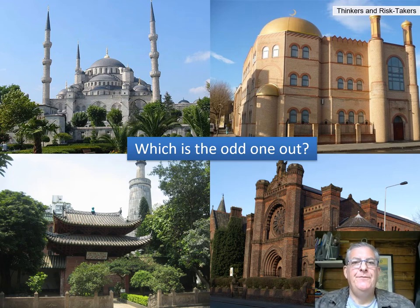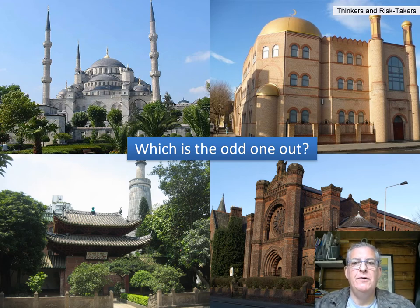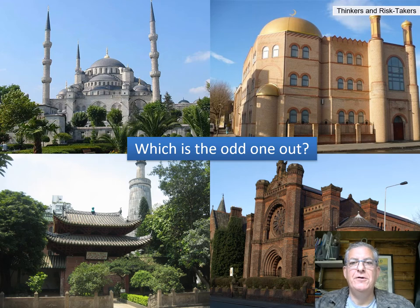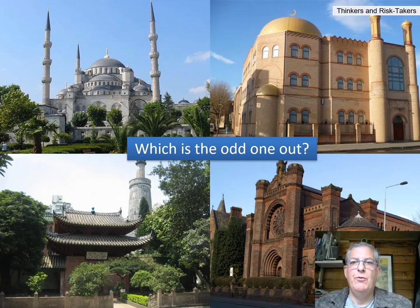So this first screen is designed to catch you out. Which one of these four photos is the odd one out? Have a look and have a think. Well, the fact is there is no odd one out. They are all mosques, pointing out that mosques come in different shapes and sizes, although they have a lot of similar features — and that's what we're going to look at today: what a mosque has that essentially makes it a mosque.